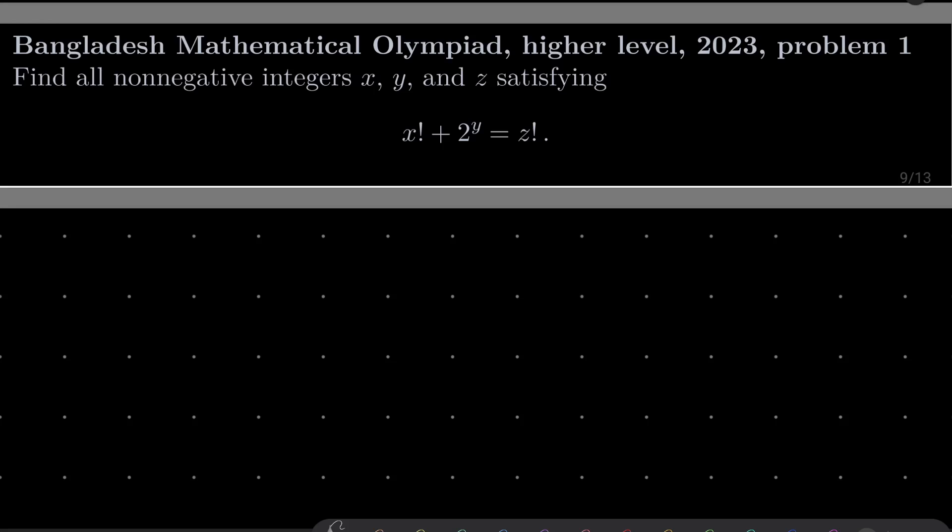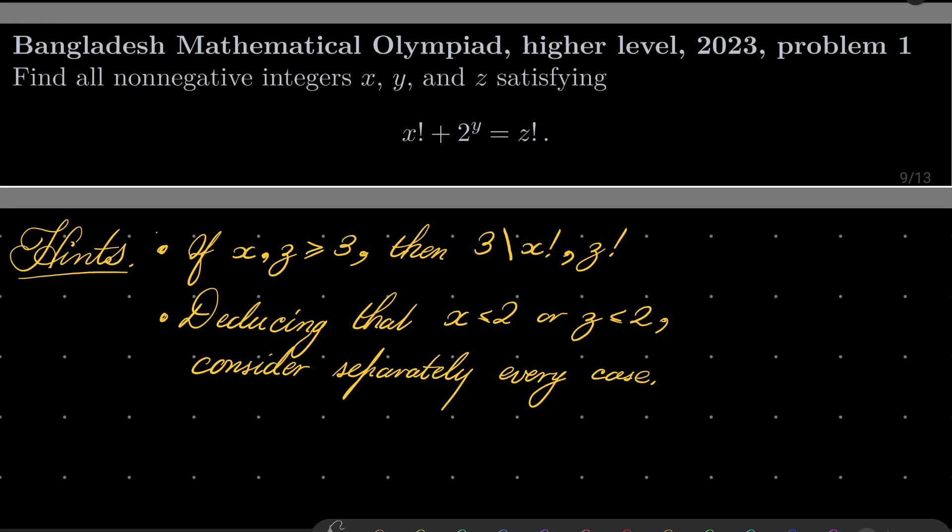It's a rather simple problem. Here are my hints. First, notice that if x and z are both greater than or equal to 3, then x factorial and z factorial are divisible by 3. You should deduce that in this case we have no solutions. And so deducing that either x is less than or equal to 2 or z is less than or equal to 2, you should go case by case. So consider every case. We'll give this problem a try.